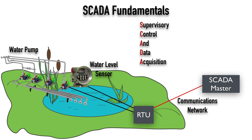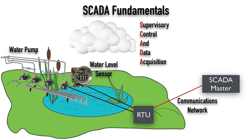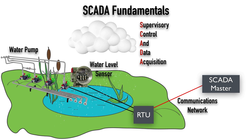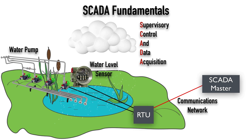With all of these pieces in place, let's say a rain cloud moves in and it starts to rain and this pond starts to fill up. The water level sensor is going to detect that the water level is rising and report that to the RTU, which is going to send a notification over the communications network to the SCADA master. The SCADA master can then tell the RTU to send a signal to the water pump to start pumping out the excess water. That's a really simple example of a SCADA implementation.